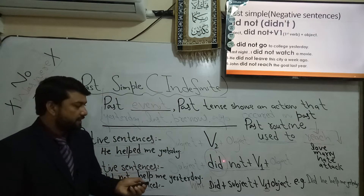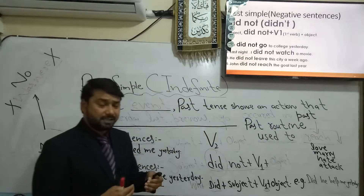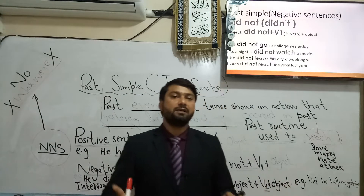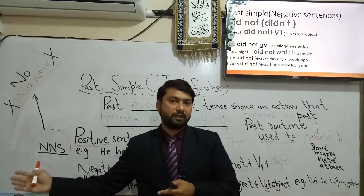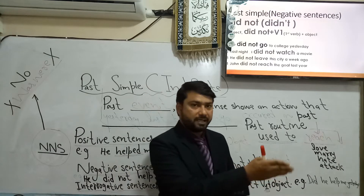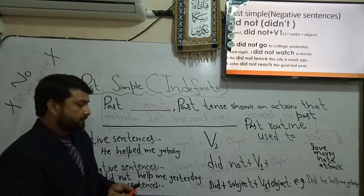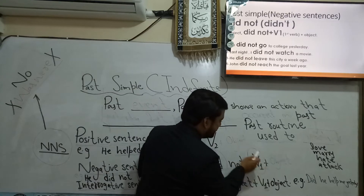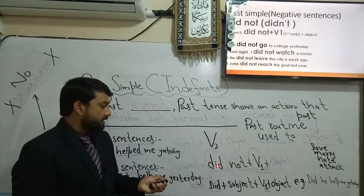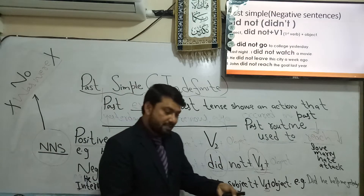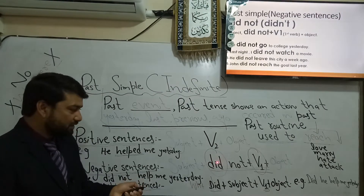We use 'did not' to make negative sentences in past simple. This is easier than present simple, where you use 'do' or 'does' depending on the subject. In past simple, you simply use 'did not' for all subjects. After 'didn't,' you use V1 — the first form of the verb — and this tells us the sentence belongs to past.